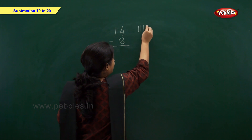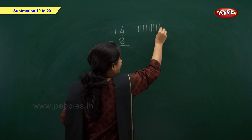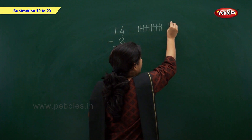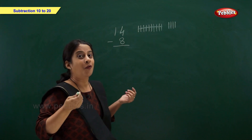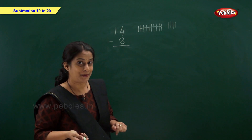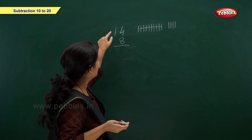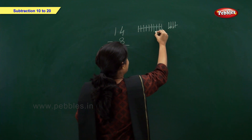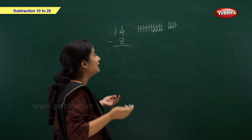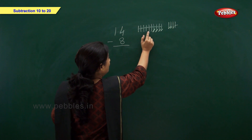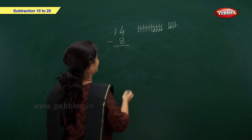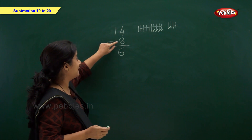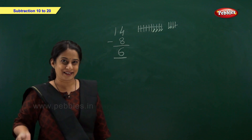Now we have 14 minus 8. Let's draw: 1, 2, 3, 4, 5, 6, 7, 8, 9, 10 — this is 1 ten. Then 1, 2, 3, 4 — that's 4 ones. Now let's take away or subtract 8 from 14: 1, 2, 3, 4, 5, 6, 7, 8. Now how many remaining? Let's count: 1, 2, 3, 4, 5, 6. So friends, 14 minus 8 is equal to 6. Thank you.